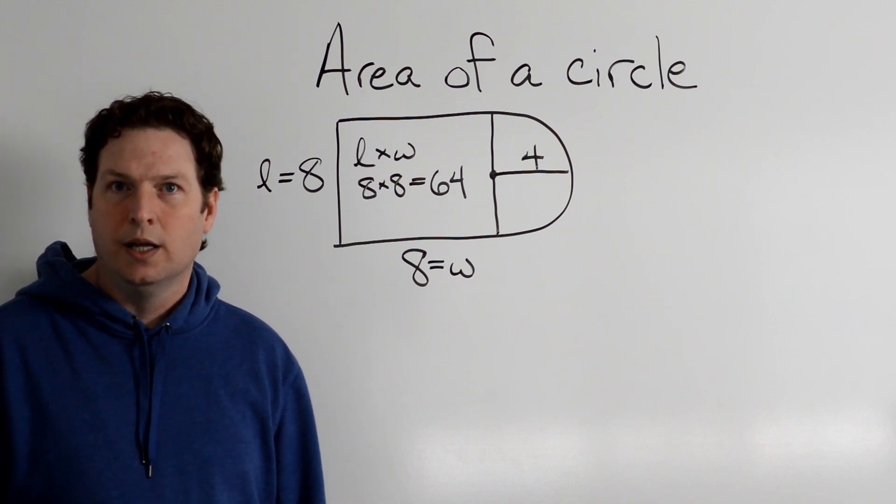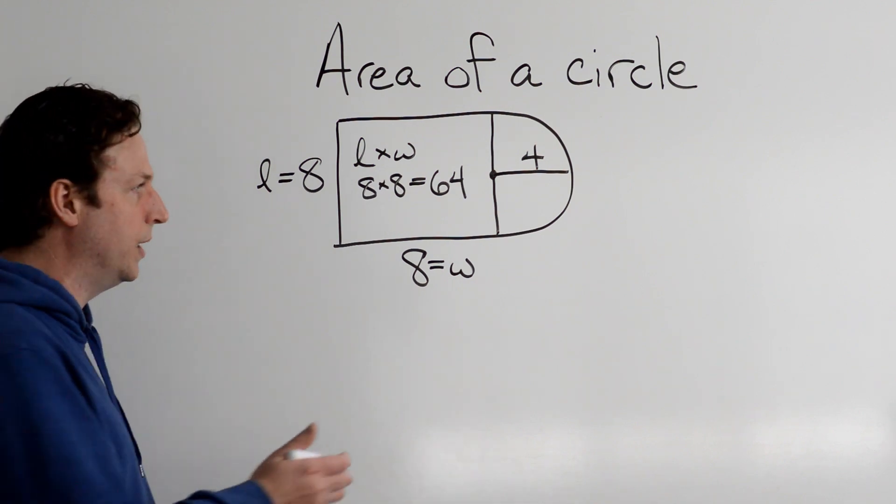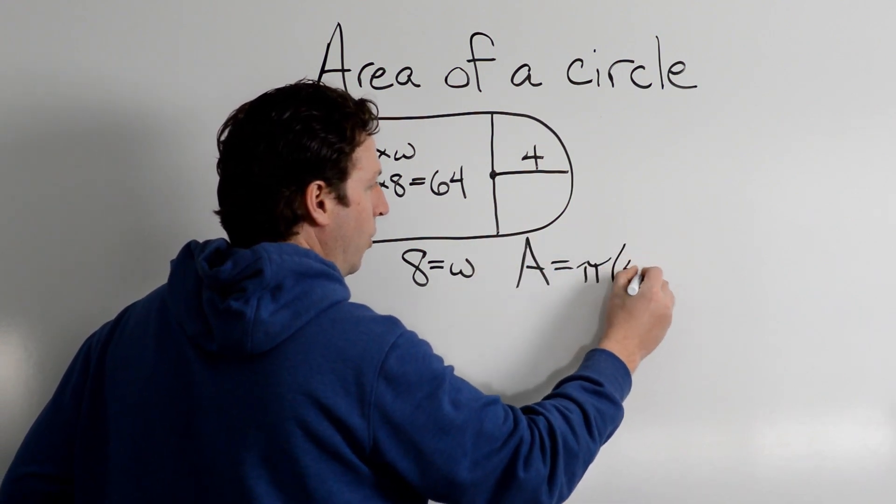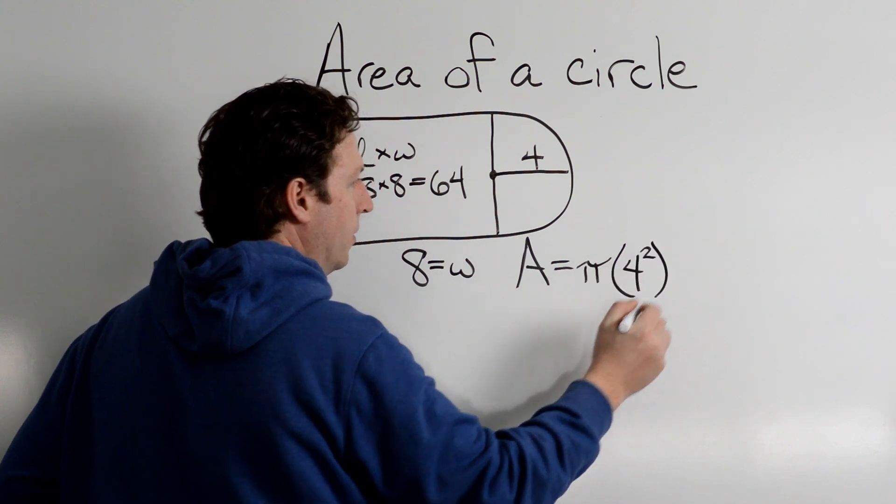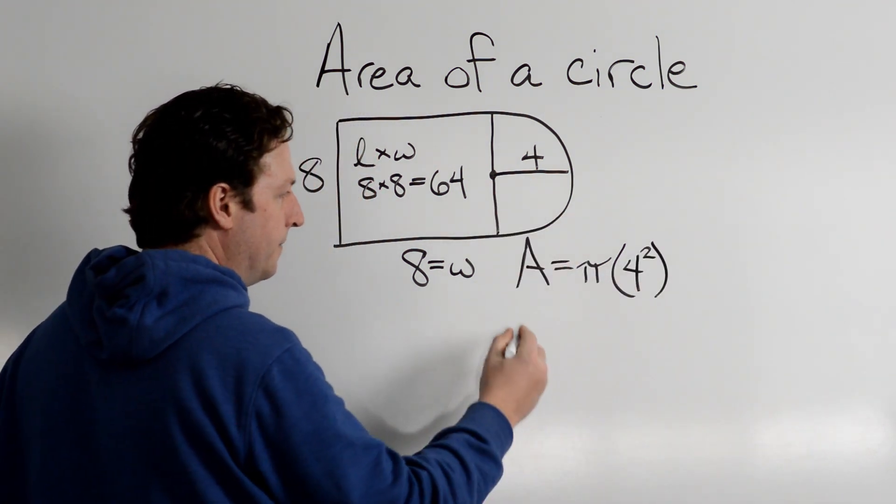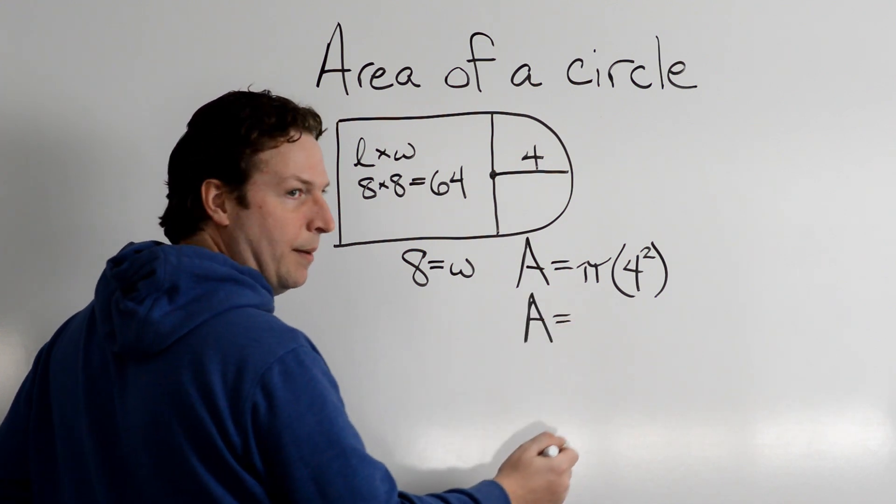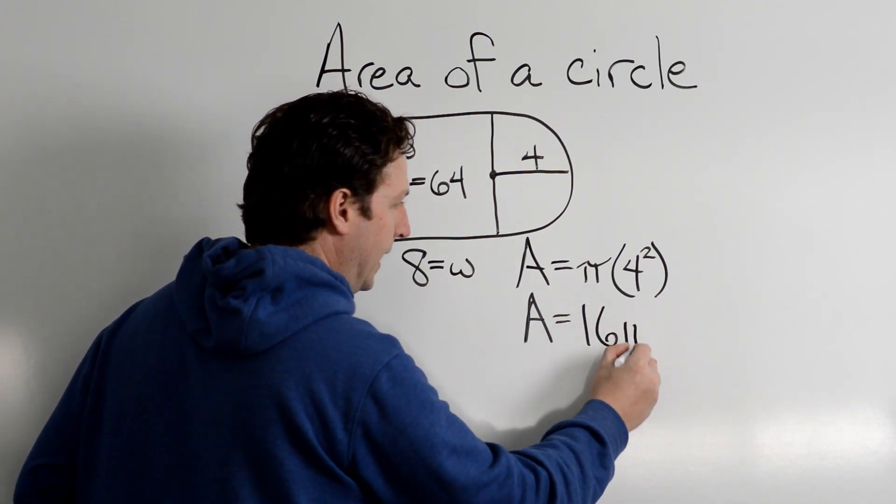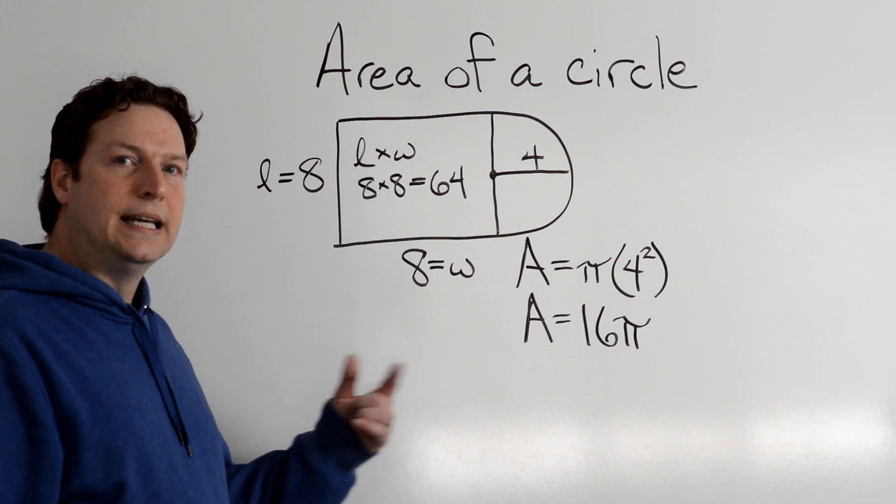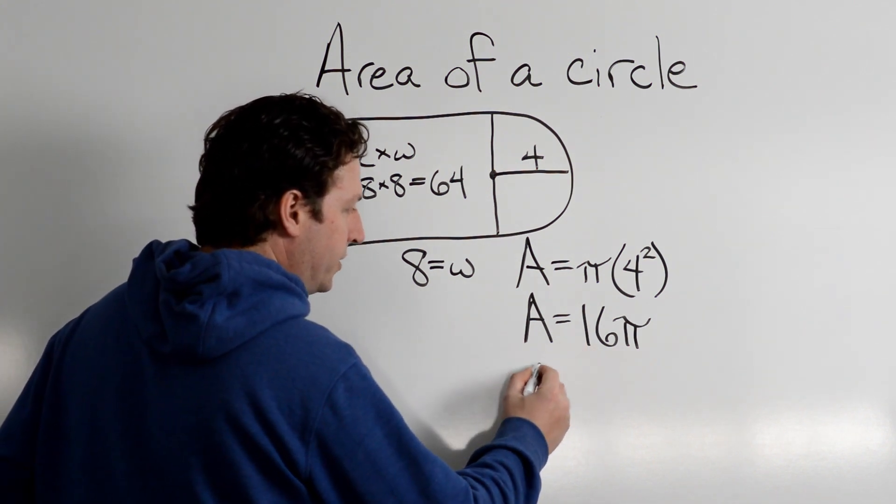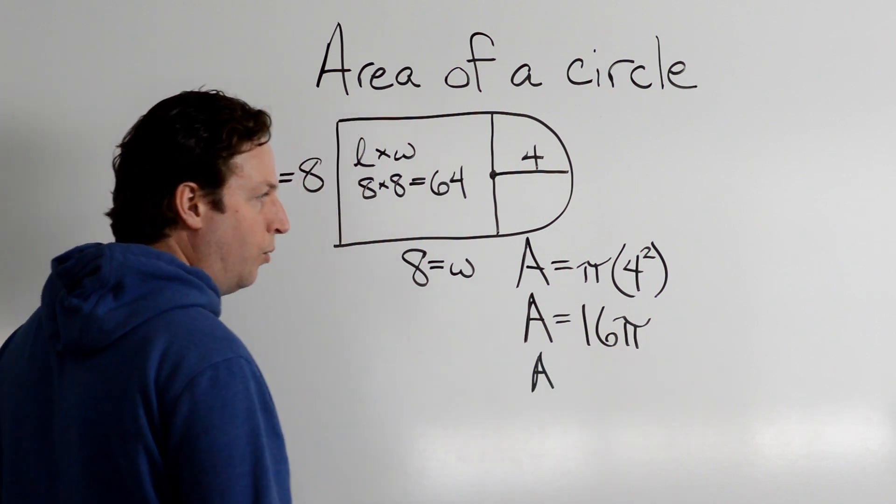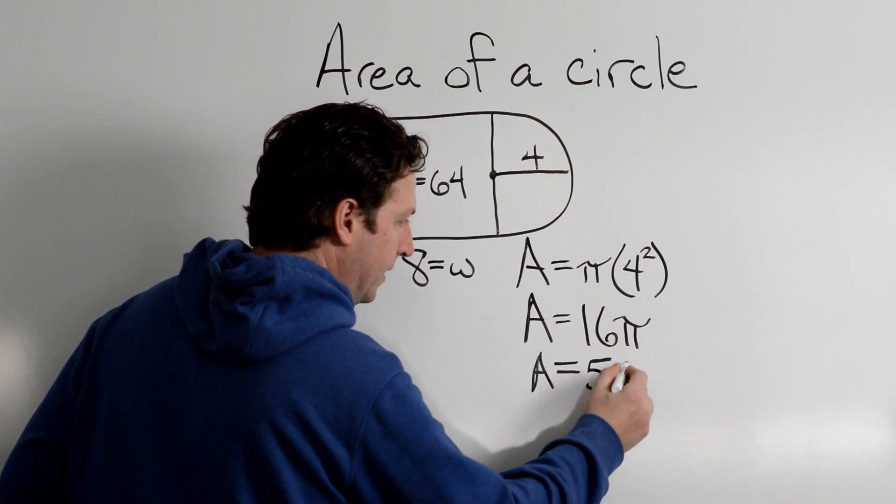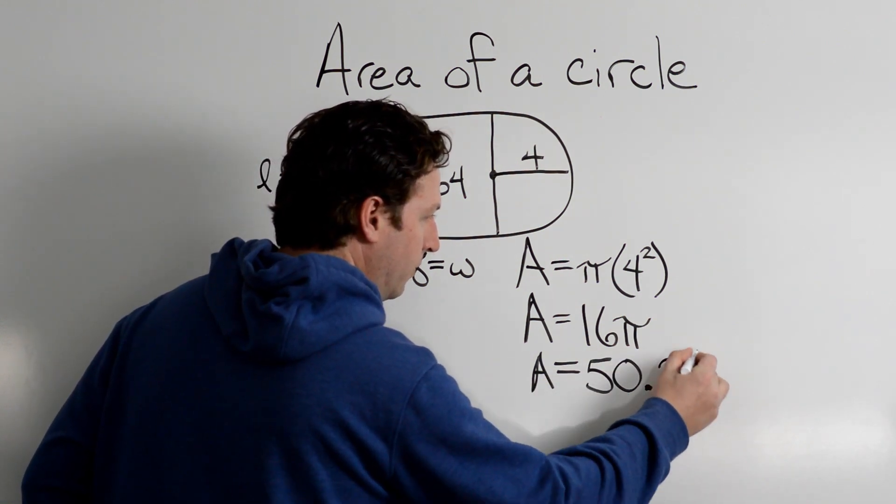Now we need to find the area of a circle with a radius of 4, and we did this in the first example, but let's do it again. So I know that the area is pi times 4 squared. 4 is my radius, I'm plugging it in. So the area is, and I'm going to do this, 4 times 4 is 16. 16 pi. Now I have one other step. I'm going to multiply this by 3.14. Remember, pi is 3.14, and I get 50.24.